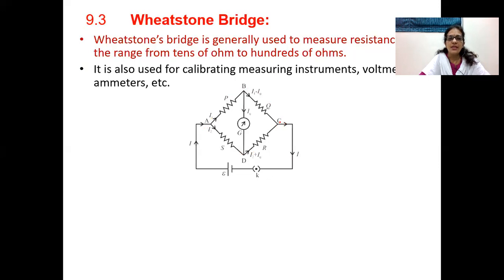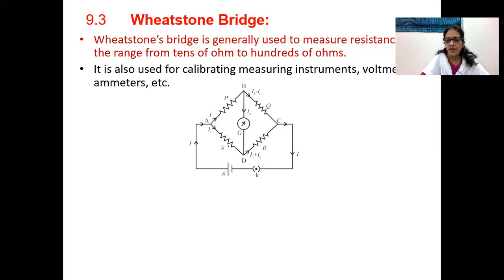If this network is to be balanced, we can derive a formula that makes it easy to find any one unknown resistance if the other three resistors are known. To derive the balancing condition, we will use Kirchhoff's second law — the closed loop voltage law.